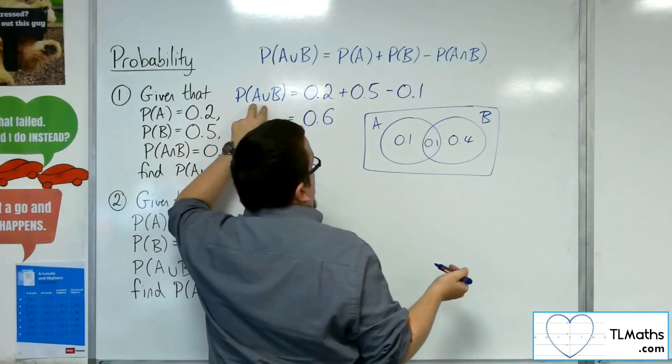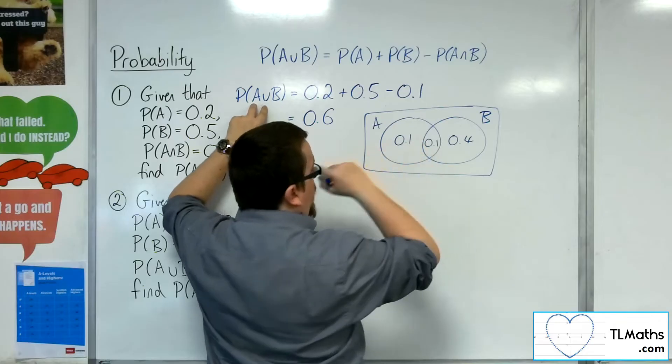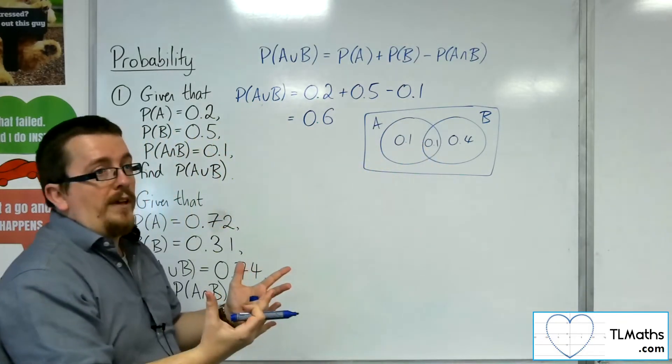So when we look at the union, it's the 0.4 plus 0.1 plus 0.1, which makes the 0.6.